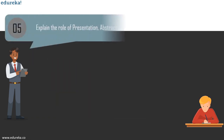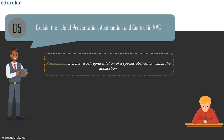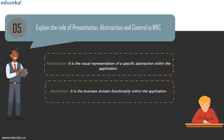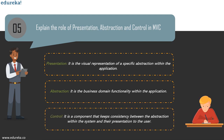The next question is: explain the role of components — Presentation, Abstraction, and Control in MVC. Presentation is the visual representation of a specific abstraction within the application. Abstraction is the business domain functionality within the application. Control is the component that keeps consistency between the abstraction within the system and the presentation to the user, and is also used to communicate with other controls within the system.